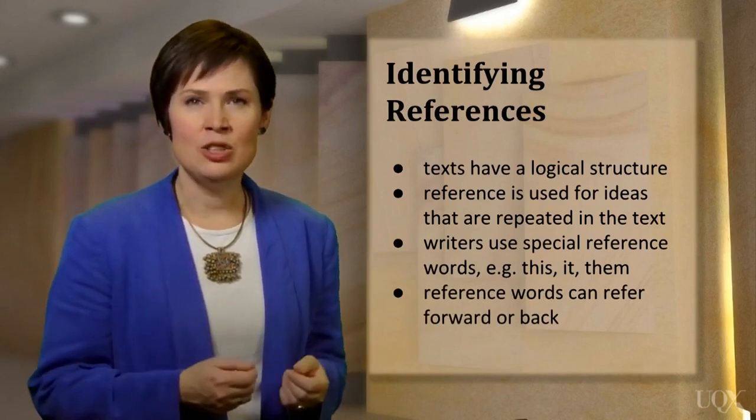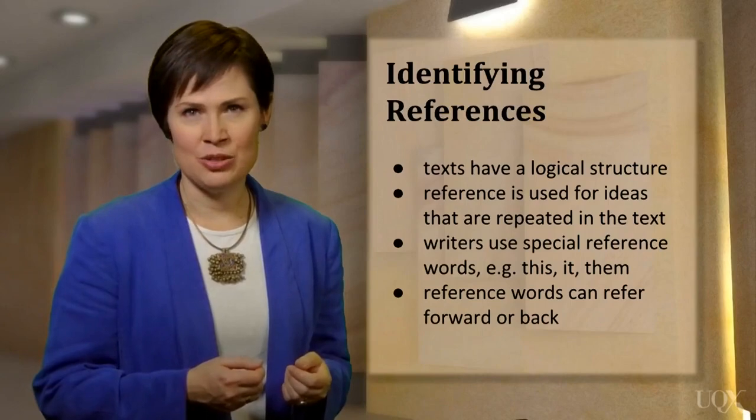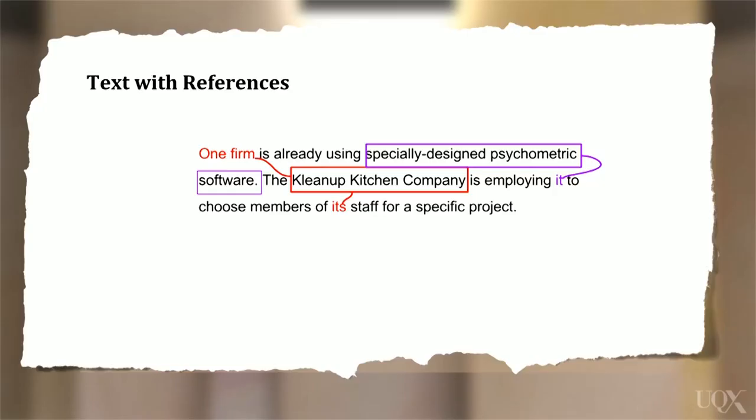Let's take a look at an example of how reference is used. In this example, you can see how reference words have been used to show that information is being repeated. These reference words may come before or after the person or thing being referred to. As you can see, 'one firm' refers to the Clean-Up Kitchen company, so the reference comes before the name of the company is given.